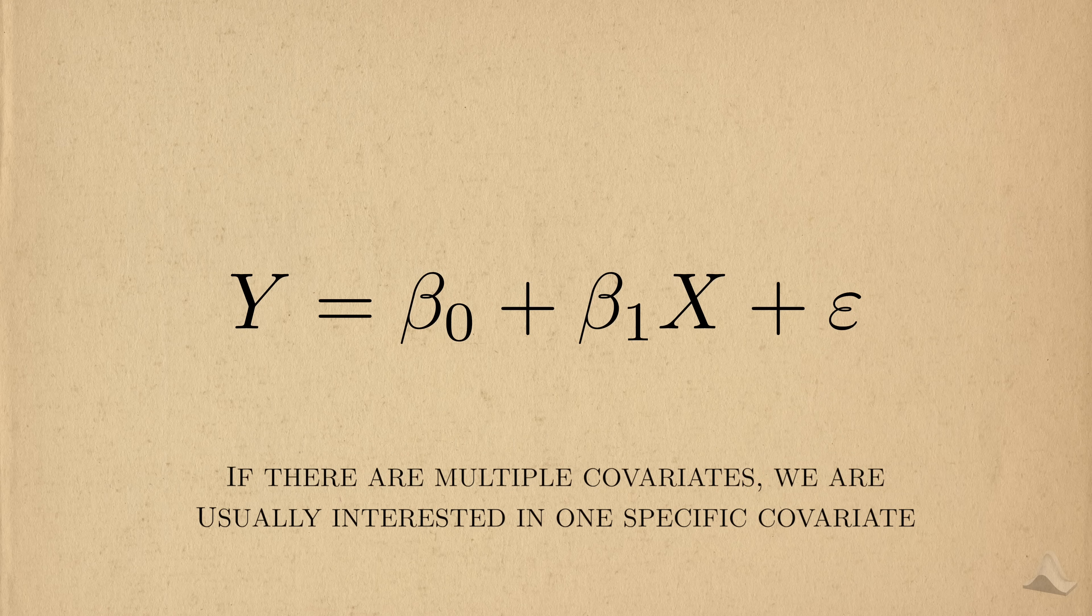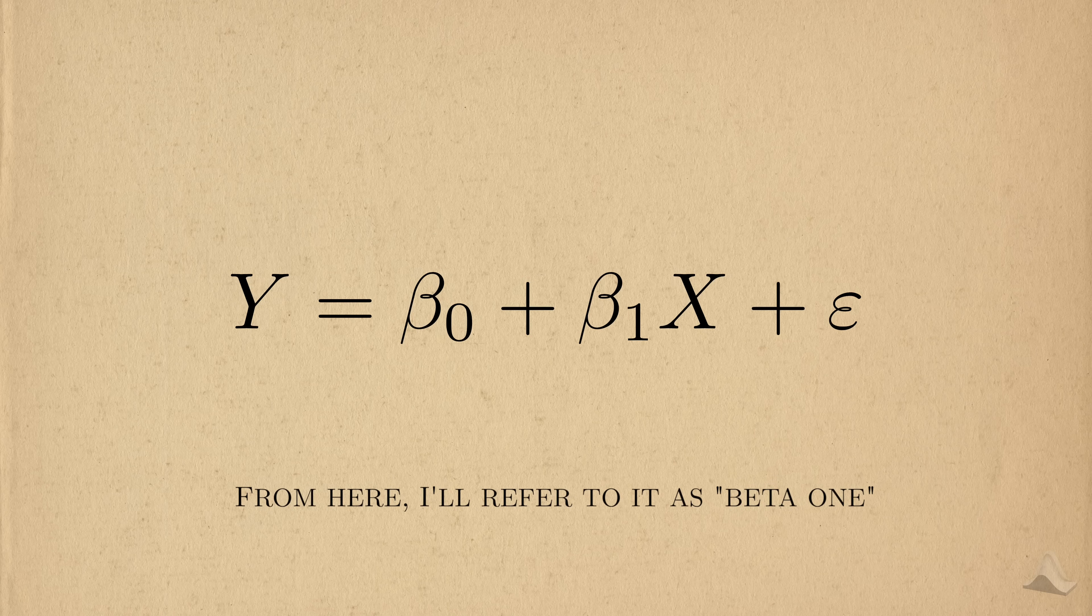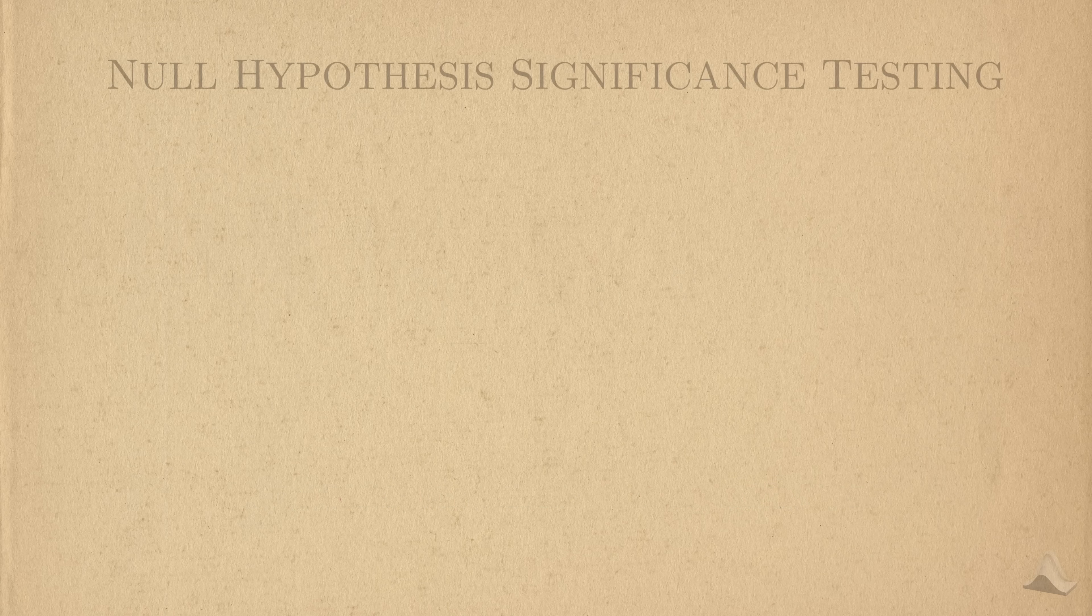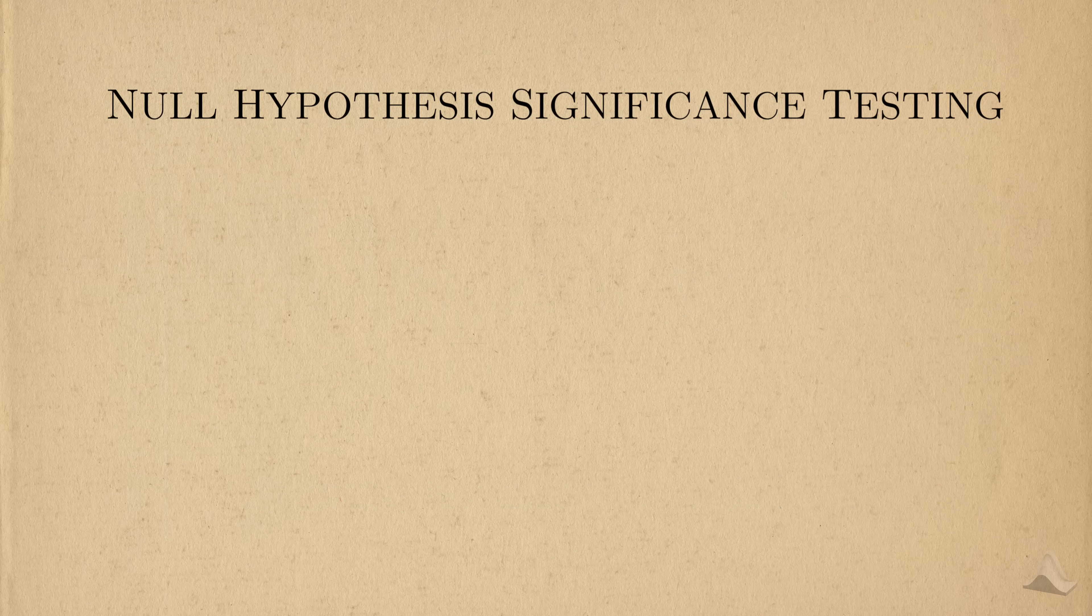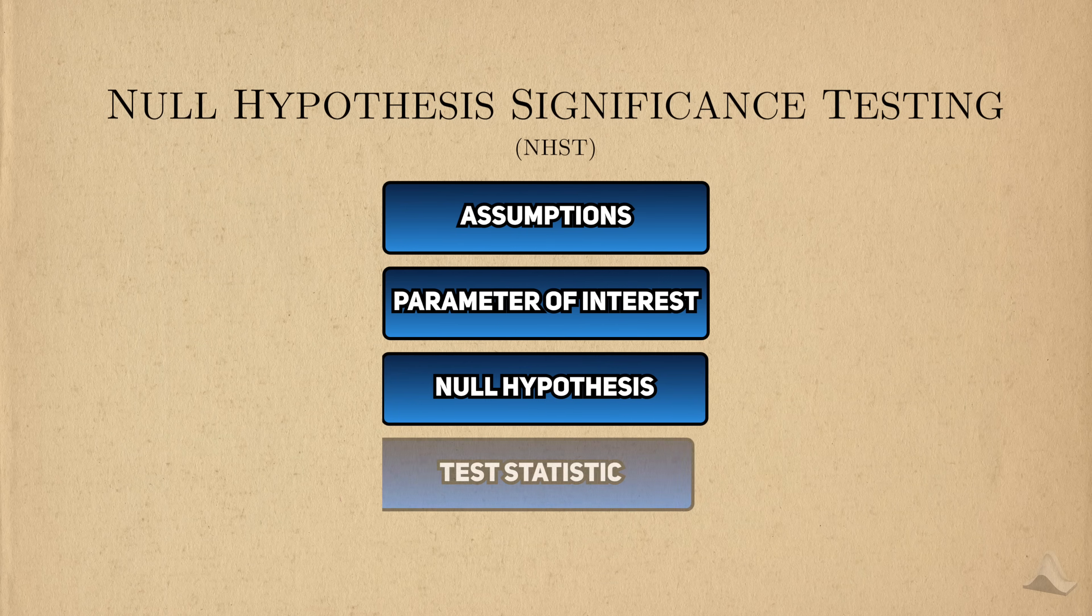Based on what I've talked about, I hope it's more clear that the non-intercept coefficients are what capture the relationship between x and y. Because of this, they're often the main focus for a linear regression hypothesis test. And usually we're only interested in the coefficient for a specific covariate, like a treatment or a risk factor. For reference, I'll call this specific coefficient beta 1. Similar to what we did with past hypothesis tests, we'll cover it using the NHST framework.